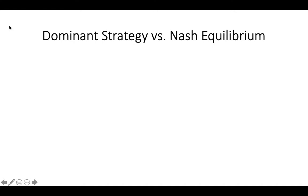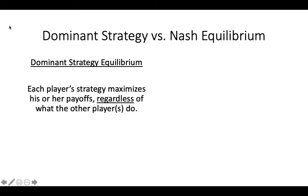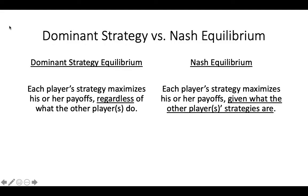Let's compare this definition to that of a Dominant Strategy Equilibrium. In a Dominant Strategy Equilibrium, each player's strategy is optimal regardless of what the other players do. Thus, players do not really have to think much about what the other players are going to do, because they have a strategy that is the best for them no matter what. In a Nash Equilibrium, each player's strategy is optimal, but conditional on what the other players are doing. Thus, each player has to think about what the other players are likely to do.